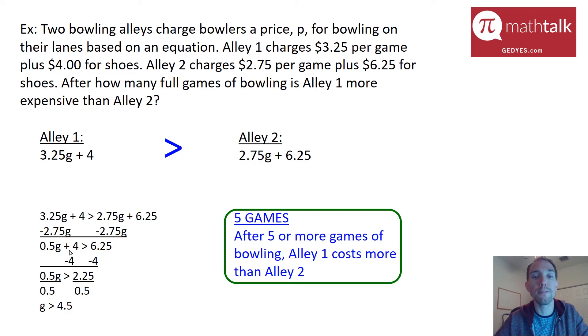After five or more games, the cost for alley one is more expensive than alley two. For one through four games, it's going to be cheaper to bowl at alley one. When solving comparison problems, sometimes you can just plug in a value, but other times you need to actually solve the inequality or equation — plugging in random numbers isn't the best approach.